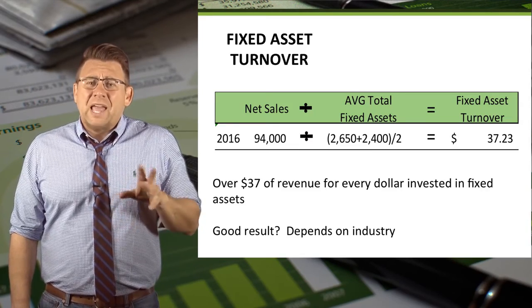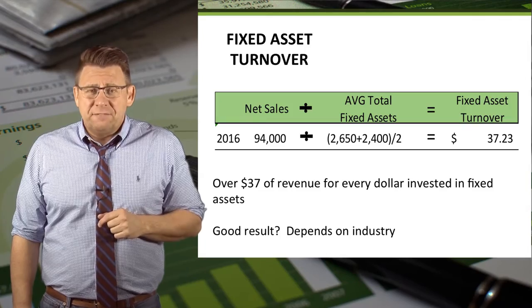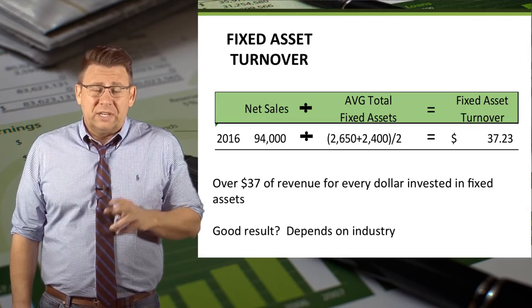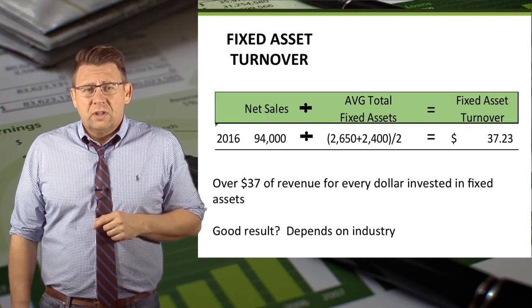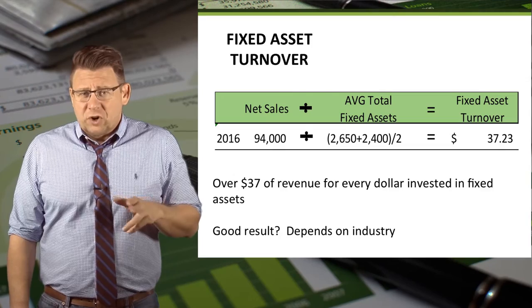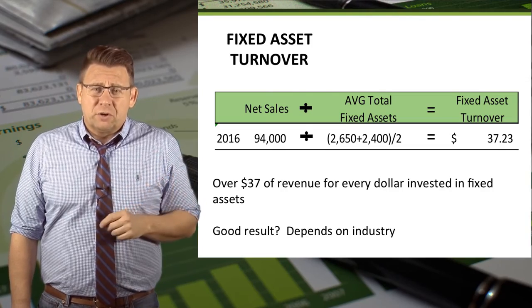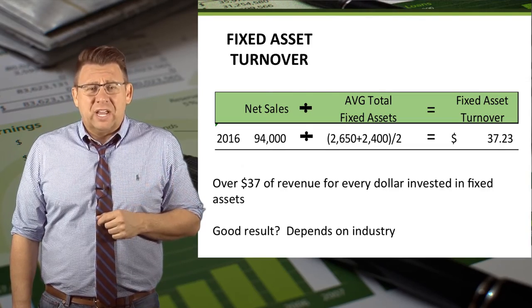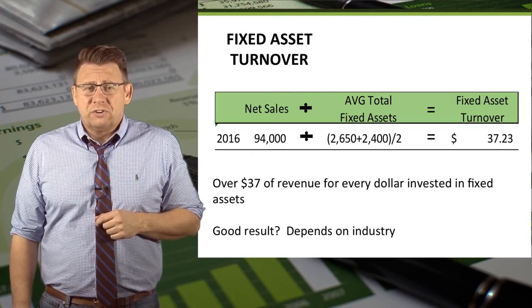This means that for every $1 invested in fixed assets the company is generating over $37 of sales revenue. It is likely that fixed assets aren't a significant driver of revenues for a company to have such a large number. Service firms like law firms and accounting firms tend to have very high fixed asset turnover ratios.